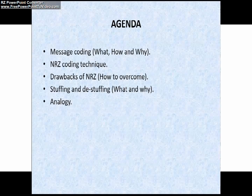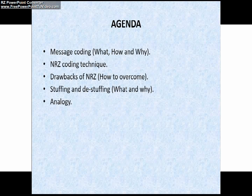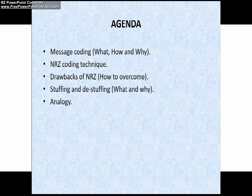The agenda for the day is message coding. Here we are going to learn what is message coding or encoding, how it is done, and why it is necessary in a CAN network. The second topic is NRZ coding technique, followed by the drawbacks of NRZ and how to overcome them. Then stuffing and de-stuffing, and finally we will discuss stuffing and de-stuffing with an animated analogy.